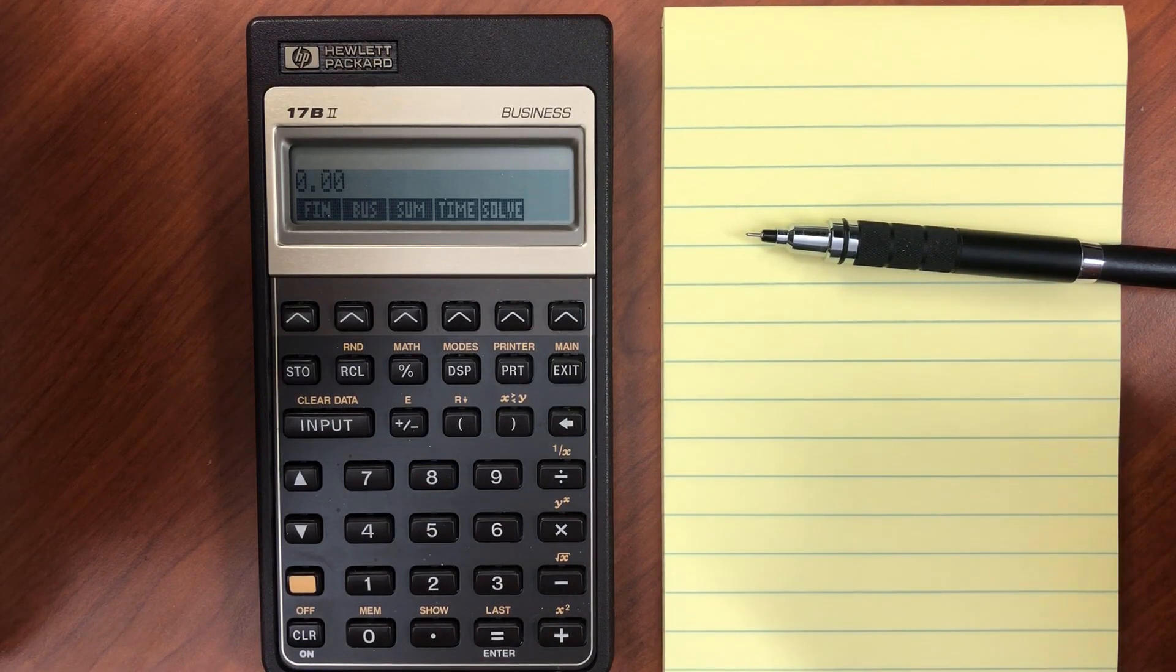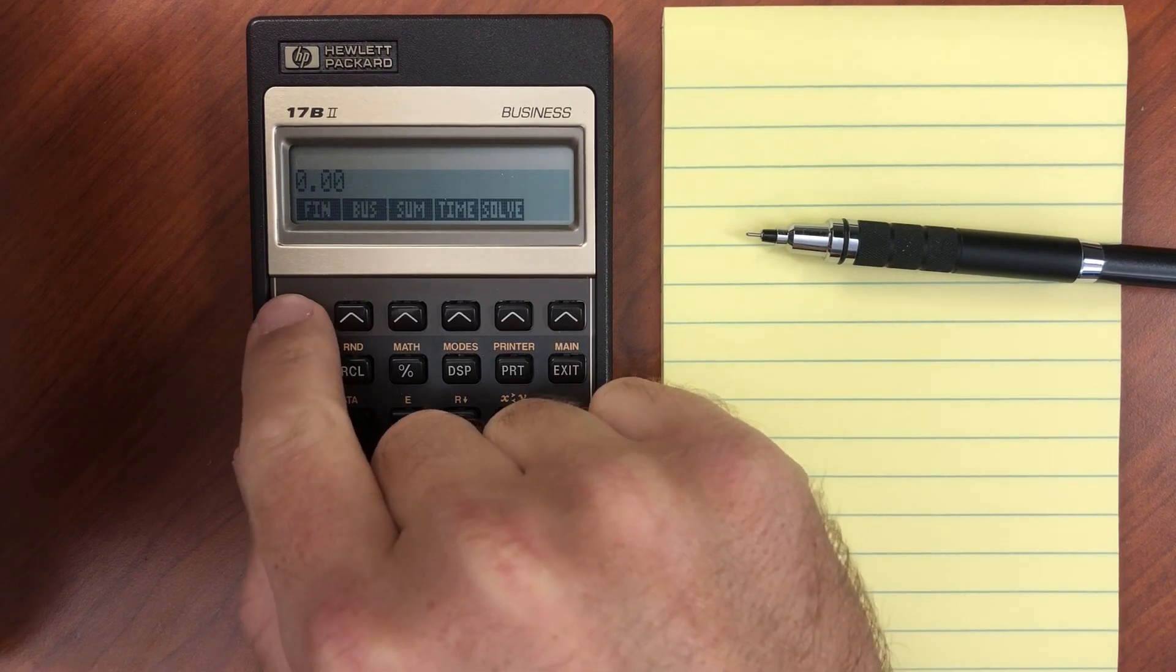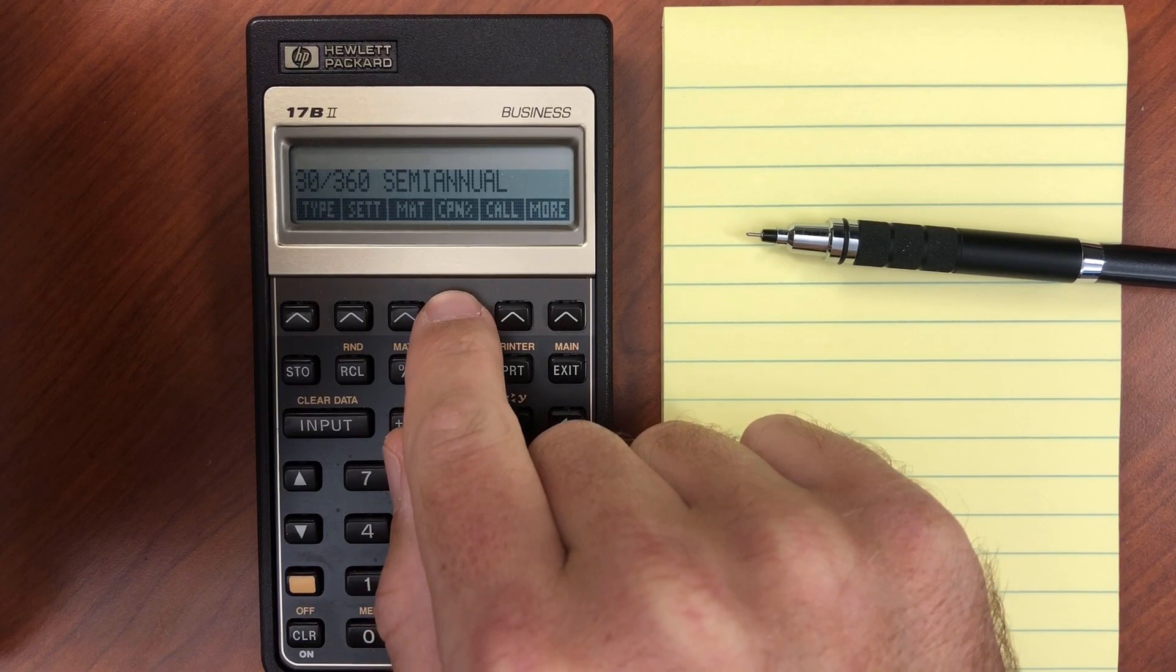Another menu that I think is best played around with rather than run through some calculations is the bond menu under finance. There's all kinds of things you can do with bonds.